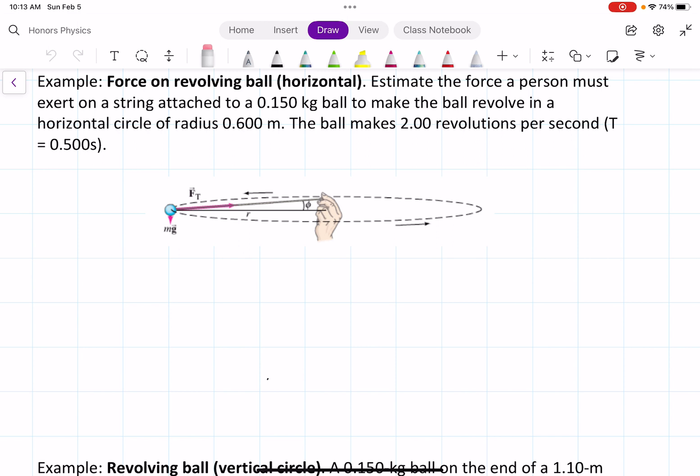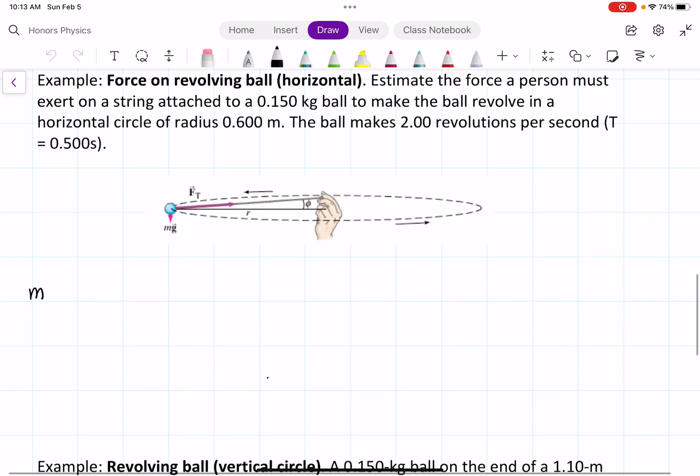We're going to write down what we know: the mass equals 0.15 kilograms, the radius is 0.6 meters, and the frequency is equal to 2.00, 1 over seconds.